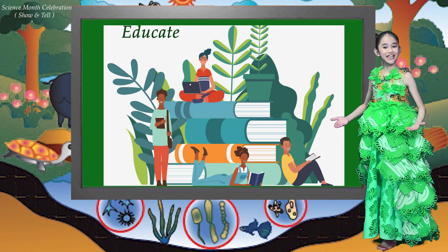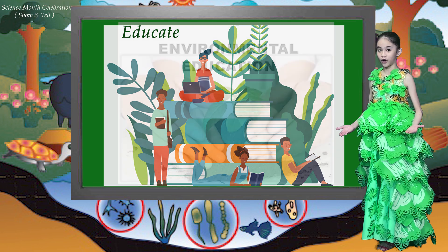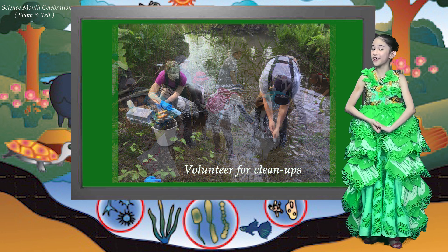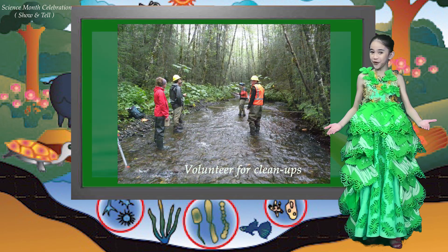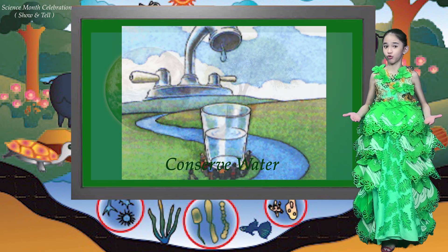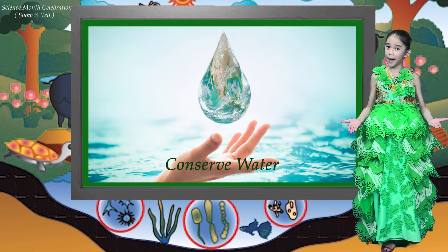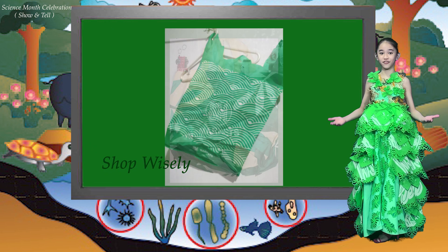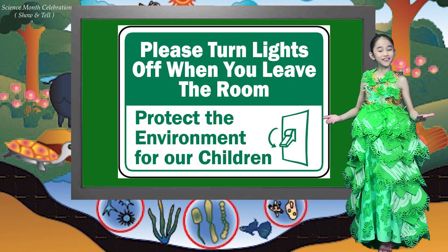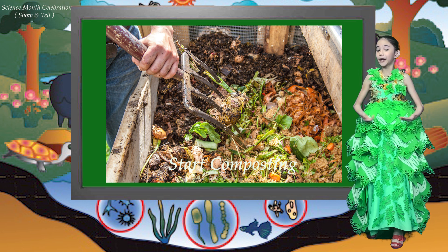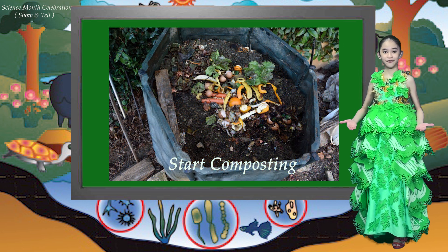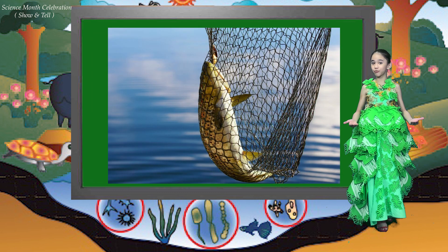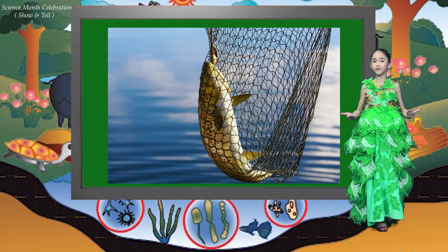Educate. When you value education, you can share your knowledge on protecting and conserving the ecosystem. Volunteer for cleanups in your community. Get involved in protecting your watershed too. The less water you use, the less runoff and wastewater that will eventually end up in the ocean. Shop wisely — buy less plastic and bring a reusable shopping bag. Flip the lights — switch off when you leave the room. Start composting. Composting organic matter reduces landfill wastes and creates healthy soil to feed your garden. Stop dynamite fishing; use nets with big holes instead to protect our marine resources.